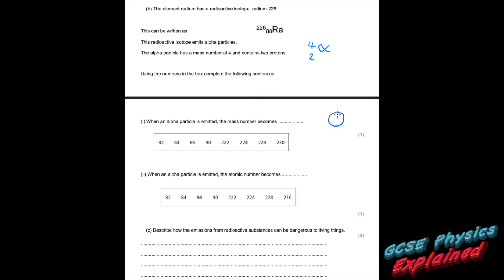When an alpha particle is emitted, the nucleus loses two protons and two neutrons. The mass number was 226; take 4 away and it goes down to 222. Part two: the atomic number becomes — well, we've lost two protons, so take 2 away from 88 and that goes down to 86.